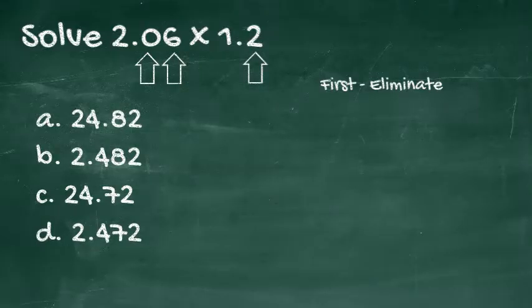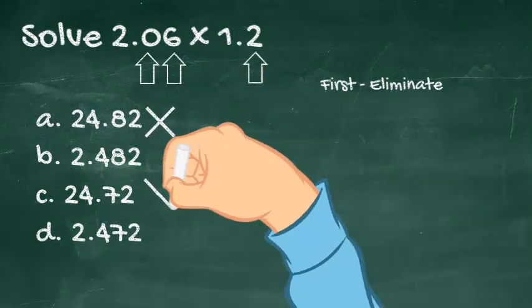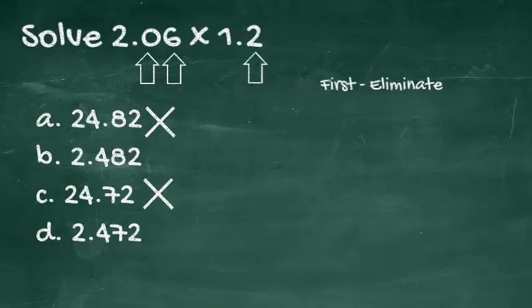Here, there are two places of decimal and one place of decimal, so we know the answer will have the sum, or three places, of decimal. So, choices A and C can be eliminated right away.